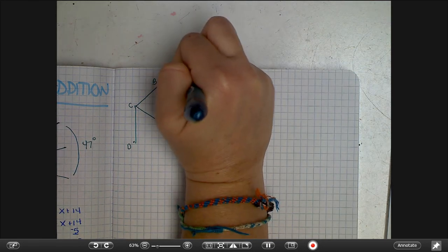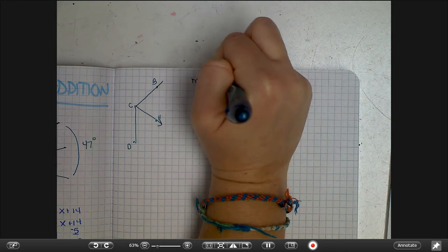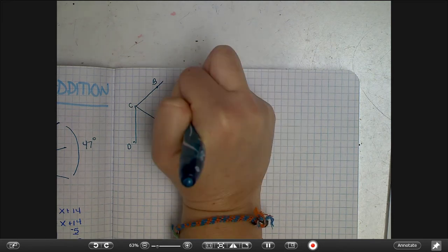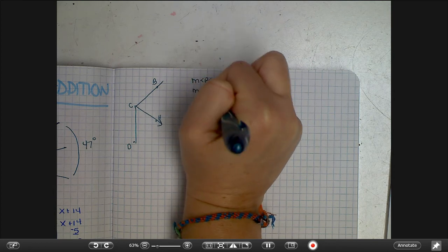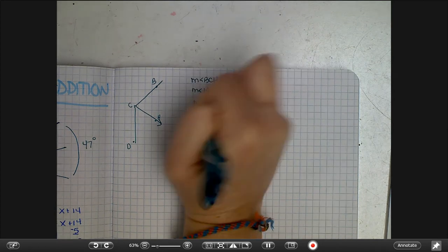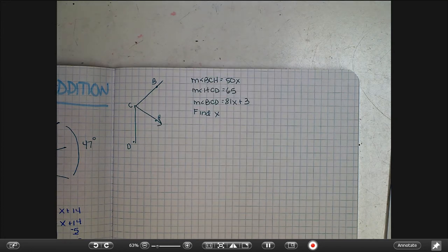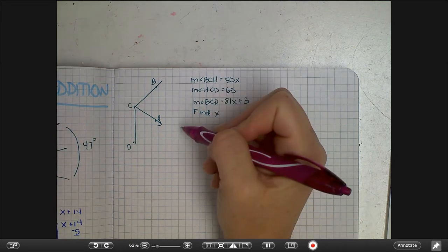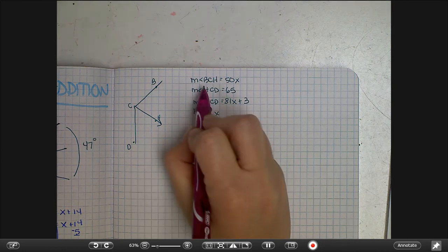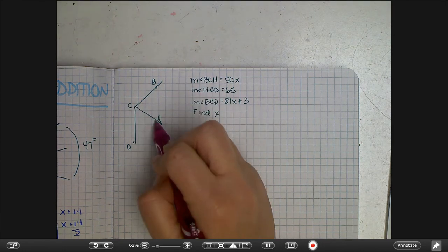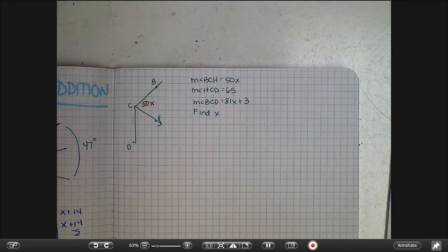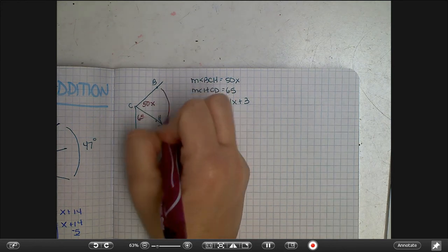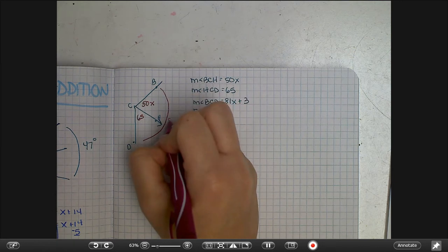We have this information: the measure of angle BCH is 50x, the measure of angle HCD is 65, and the measure of angle BCD is 81x plus 3. We want to find x. So the very first thing you should do is label your diagram, so put the information in. This is why we learned about how to name and size angles earlier in the year. So BCH is 50x, angle HCD is 65 degrees, and the whole thing BCD is 81x plus 3.